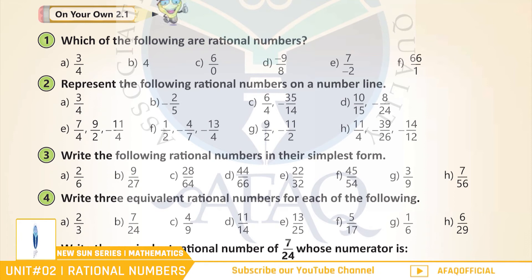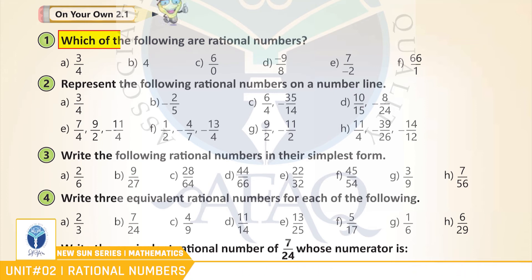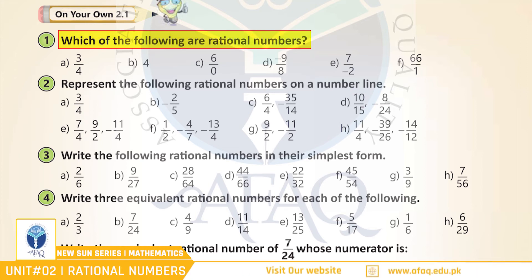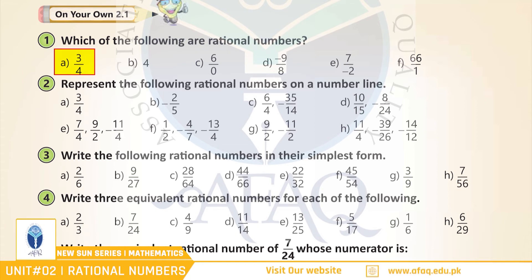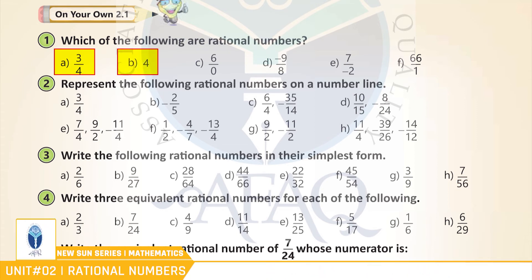Exercise سے کچھ سوال حل کرتے ہیں. Question 1: Which of the following are rational numbers? A: 3 by 4 — Yes. B: 4 — Good, Yes.